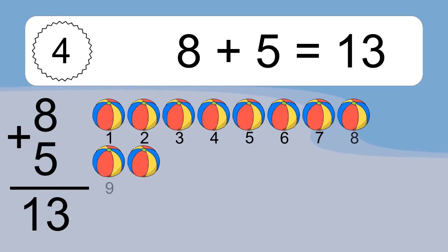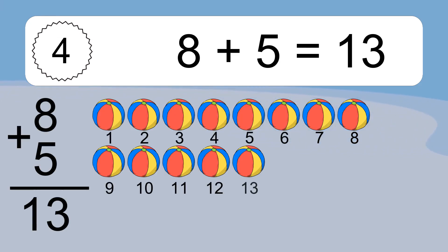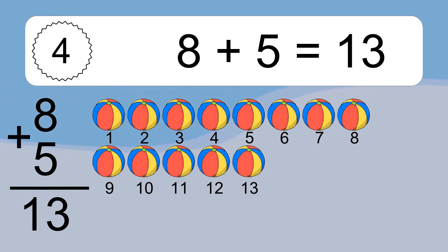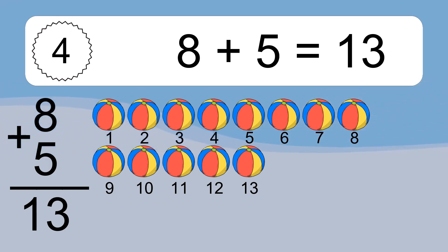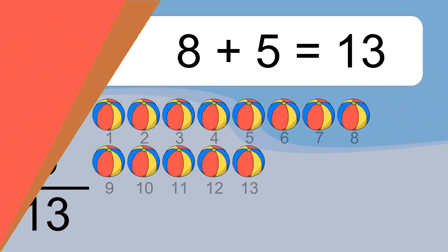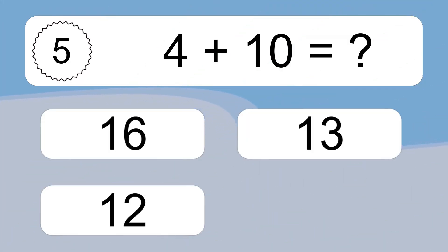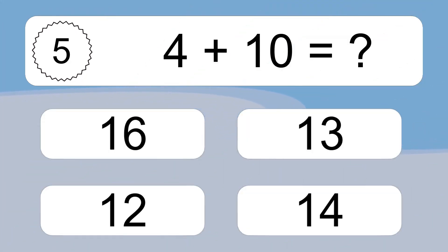Eight plus five equals what? Eight plus five equals thirteen. Let's count it: one, two, three, four, five, six, seven, eight, nine, ten, eleven, twelve, thirteen.